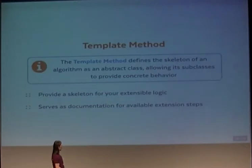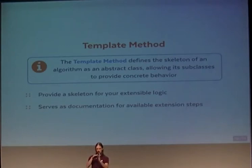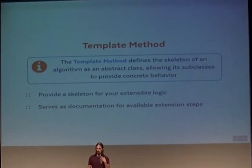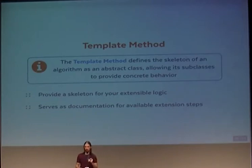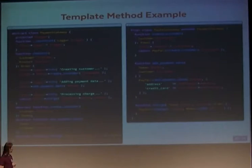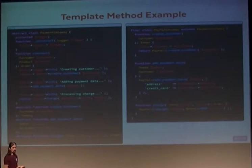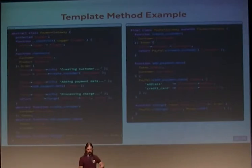The next pattern is the template method. The template method is like a recipe: you build an object that already has, in its main method, all the calls it needs to make and in which order. The methods it calls are abstract or overridable. The main structure of how the code executes is predefined, and you can replace the steps you want to change.